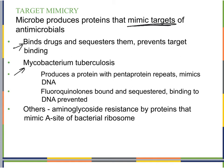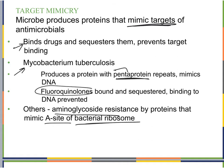We see this with Mycobacterium tuberculosis, which produces a protein with a pentapeptide repeat — a five-protein repeat that looks like DNA. Our antimicrobial fluoroquinolone thinks it's blocking DNA replication, attaching as it's supposed to, but it's bound to this fake pentaprotein and sequestered, while Mycobacterium tuberculosis keeps making DNA. Another example is aminoglycoside resistance via proteins that mimic the A site of the bacterial ribosome, providing a fake A site for the aminoglycoside to attach to.